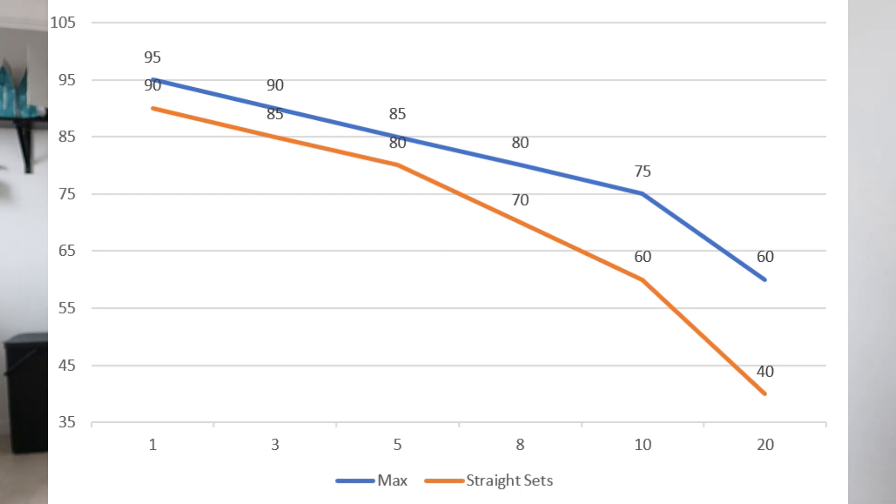The blue line on this graph is the percentage you would use for a max top set, and the red line is the percentage you use if you want to do straight sets. This doesn't mean every single triple is at 90% — it means if you're doing a max top set you'd do a triple at 90%. You might do a triple at 80% which increases to 90% across a training block, and that is how you keep intensity fluctuating over time.